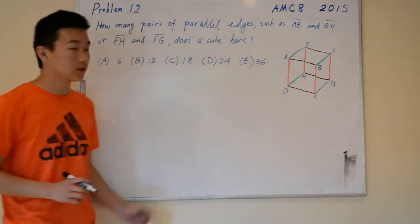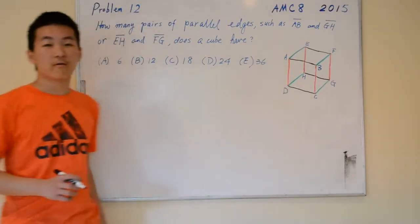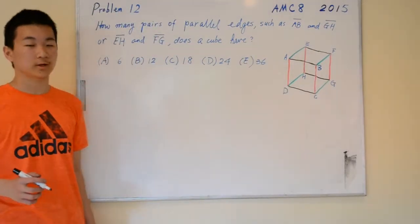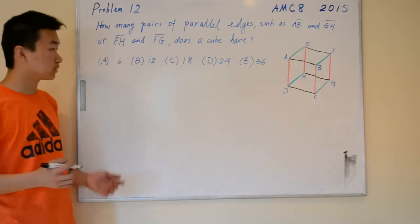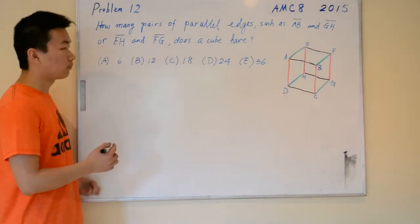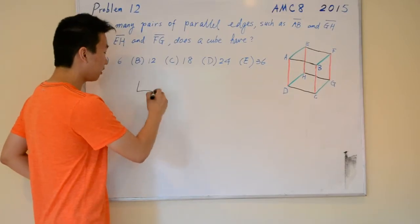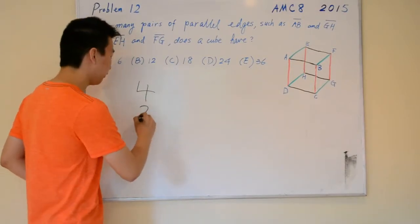So for each direction, there is a total of four different edges that we can choose from. And because we want to make a pair, we want to choose two of them. So, four edges that we choose two from.